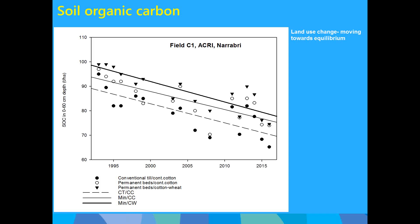A long-term trial running since 1985 at the Australian Cotton Research Institute shows trends in soil organic carbon stocks to 60 cm depth across three treatments: conventional tillage cotton monoculture, minimum tillage cotton monoculture, and minimum tillage cotton-wheat rotation. The field was brought into cotton in the 1970s, and soil organic carbon continues to decline towards a new equilibrium. The cotton-wheat rotation only reduced the rate of decline — but in commercial farming, reducing the rate of decline itself is a positive outcome.